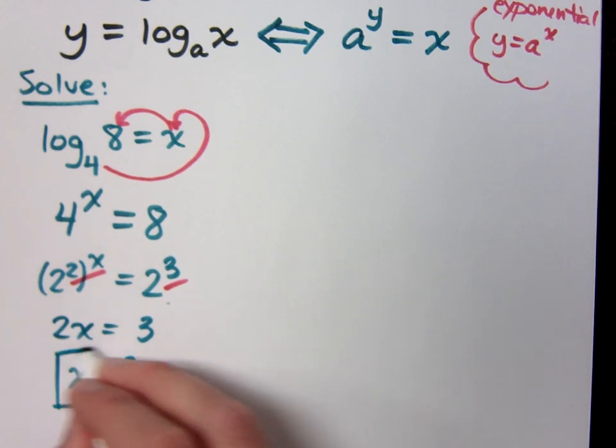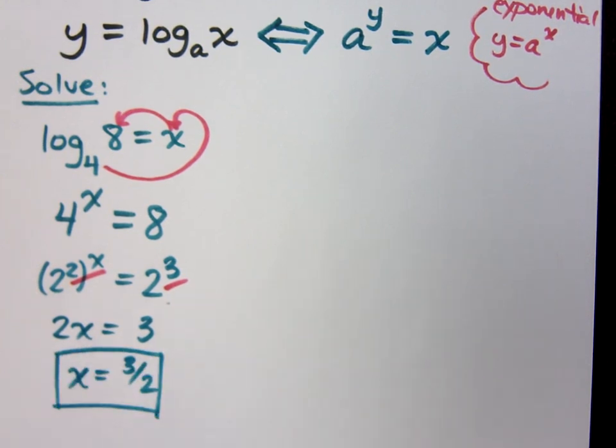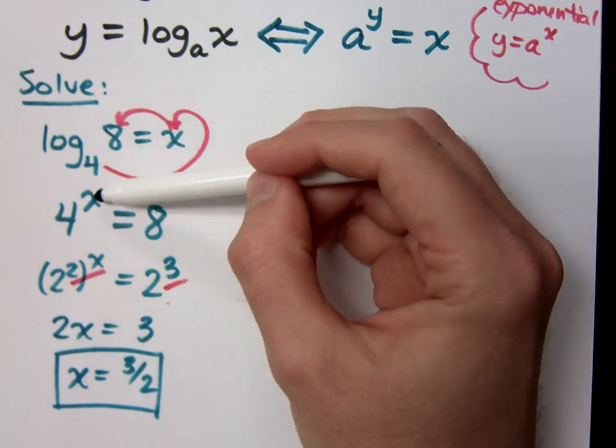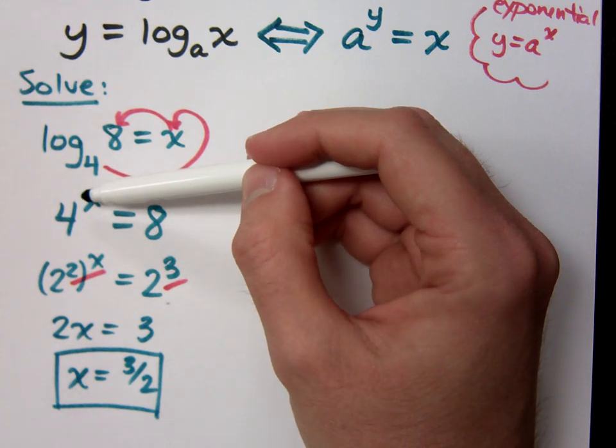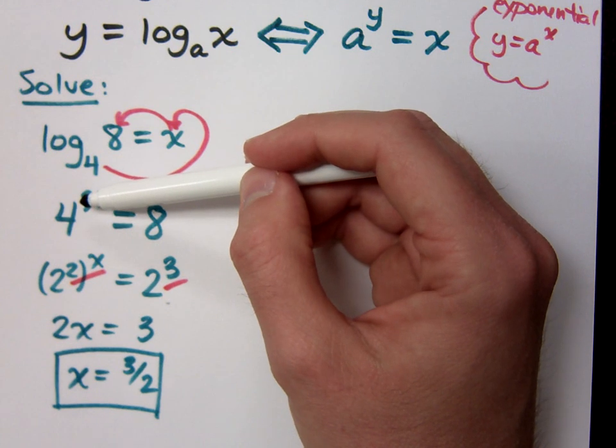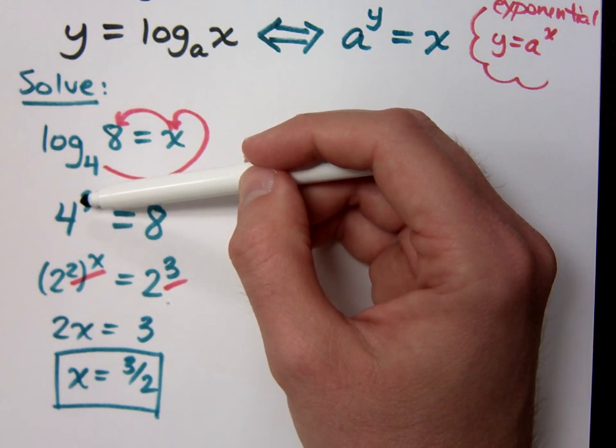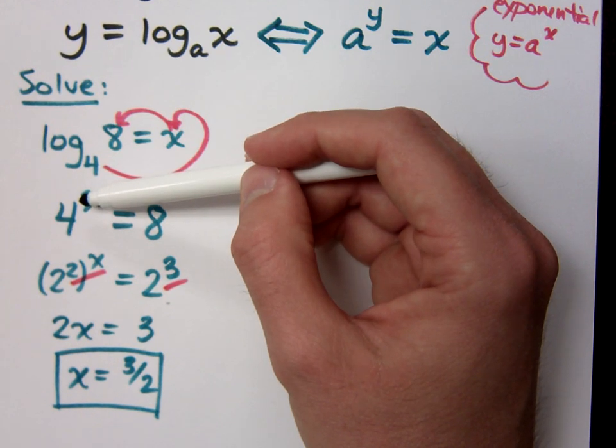Think about how that's going to make sense. 4 to the 3 halves equals 8, right? If it's 4 to the 3 halves, the exponent is a half. What does an exponent of a half mean? Remember, the denominator, it's the index.